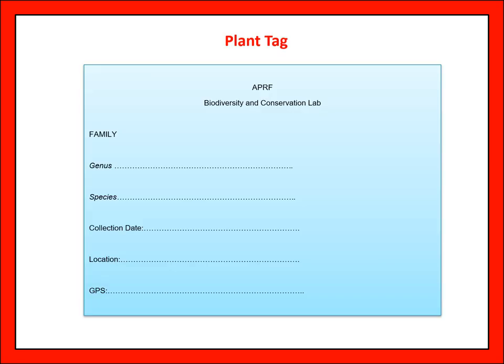The plant tag should include: family, genus, species, collection number, date, location, and GPS coordinates.